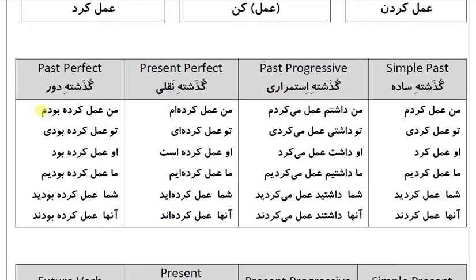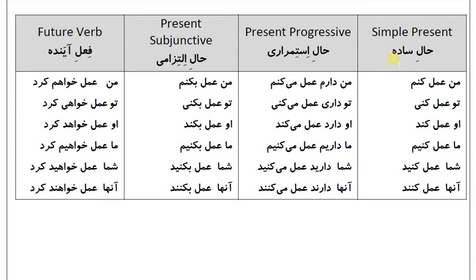Past perfect: man amal kerde boudem, to amal kerde boudi, o amal kerde boud, ma amal kerde boudiem, shema amal kerde boudid, anha amal kerde boudend. Simple present: man amal kunem, to amal kunie, o amal kund, ma amal kuniem, shema amal kunied, anha amal kund. Present continuous: man darem amal meekunem, to dari amal meekunie, o darat amal meekunet, ma dariim amal meekuniem, shema dariid amal meekunied, anha daren amal meekunend. Present subjunctive: man amal bekunem, to amal bekunie, o amal bekunet, ma amal bekuniem, shema amal bekunied, anha amal bekunend. Future: man amal khuahem kerd, to amal khuahi kerd, o amal khuahat kerd, ma amal khuahim kerd, shema amal khuahid kerd, anha amal khuahand kerd.